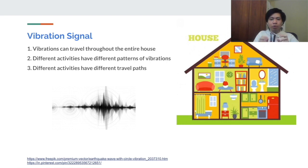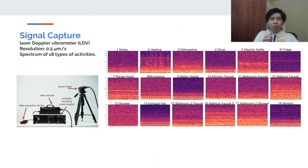However, in practice, the vibration signals traveling in the wall are usually very subtle. Therefore, we use a laser Doppler vibrometer to capture such subtle structural vibration. As shown in the image on the left, the LDV projects the laser beam at one point of the wall and detects its instantaneous vibration velocity, whose resolution can arrive at half micrometer per second.